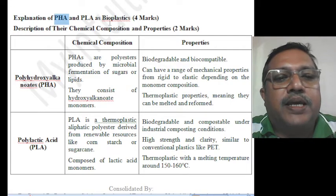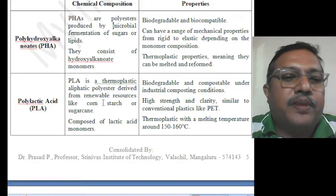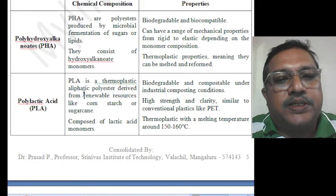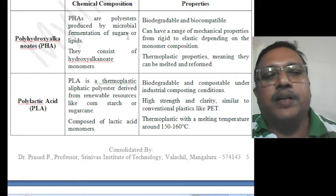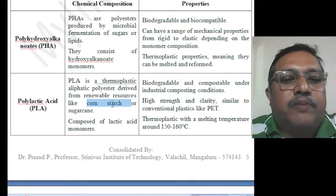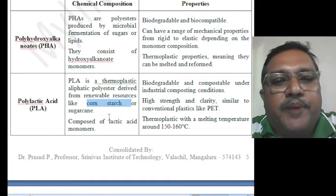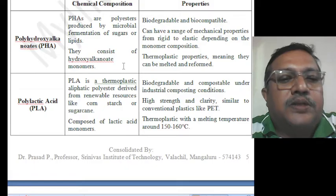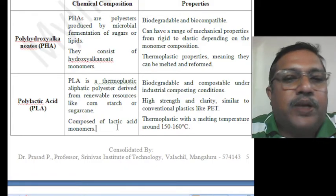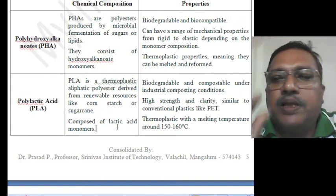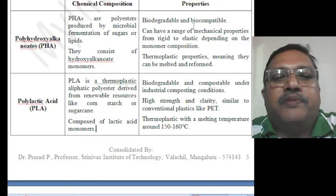Regarding chemical composition: PHA are polyesters produced by microbial fermentation of sugars or lipids, whereas PLA is prepared from corn starch. PHA consists of hydroxyalkanoate as its monomers, while lactic acid is the monomer for poly lactic acid. A monomer is the repeating unit in the long polymer structure.